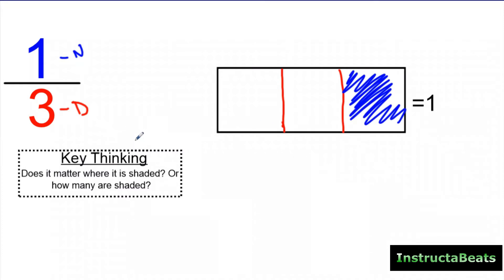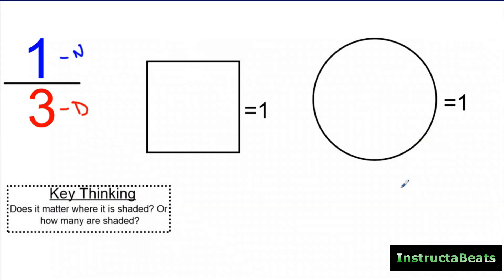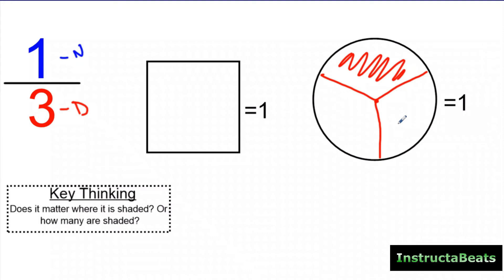Key thinking: it doesn't matter where the numerator is shaded, it just matters how many pieces are shaded. Also, it doesn't matter what the whole looks like — the whole is not always going to be a rectangle. It could be a circle, a square, a triangle. What matters is that you're splitting them into three equal parts. I could split this circle into three equal parts and shade in one of them, and that could represent one third. It doesn't matter what the whole looks like, as long as we split it into equal groups and shade the right number of pieces.